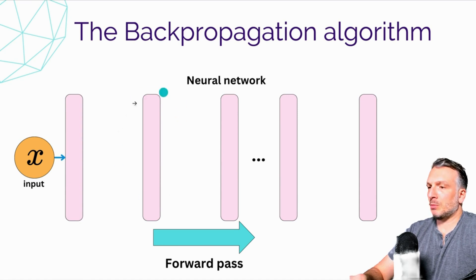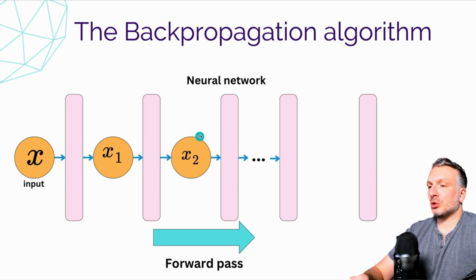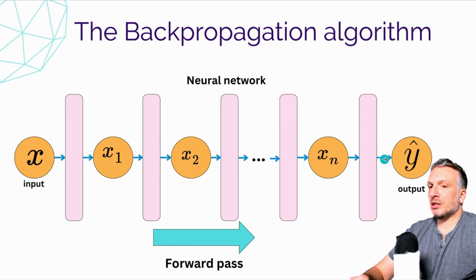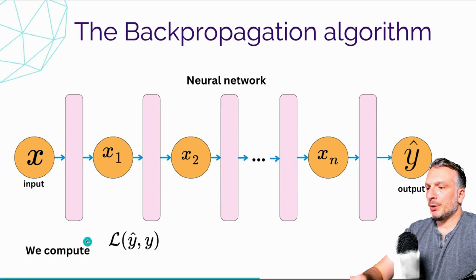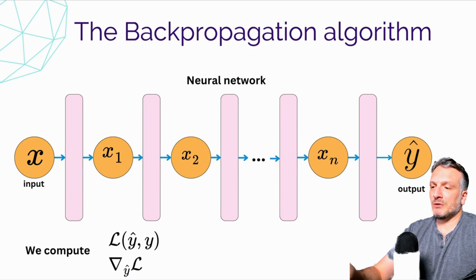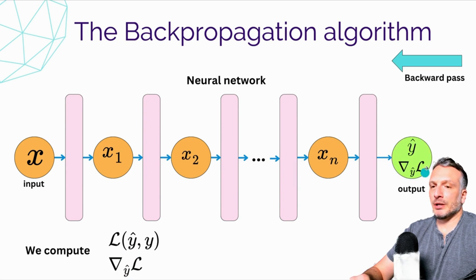Now let's see how the backpropagation algorithm helps us compute gradients for all the parameters in the different computational blocks. Consider a neural network with many computational blocks: input x goes through block one to get x1, through block two to get x2, and so on until xn. The final block provides an output that estimates the target. Once we have the estimate, we compute the loss function — we need to choose a loss function whose analytical form is easy to differentiate. We can take the gradient of the loss with respect to the network output y-hat and store it at the y-hat node.